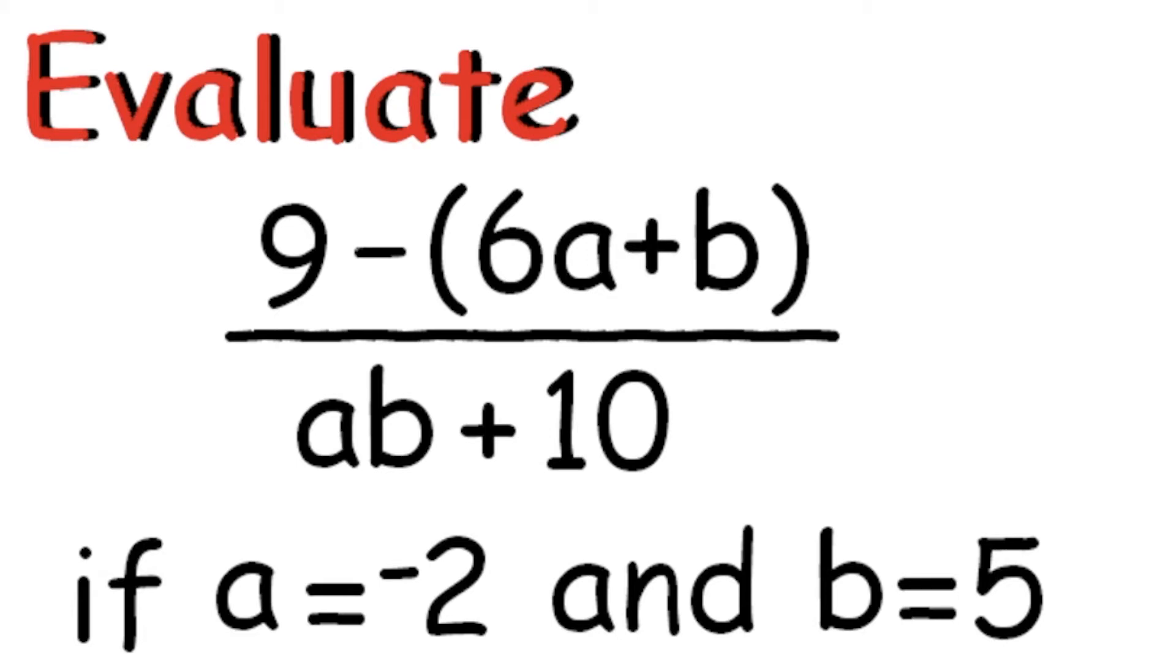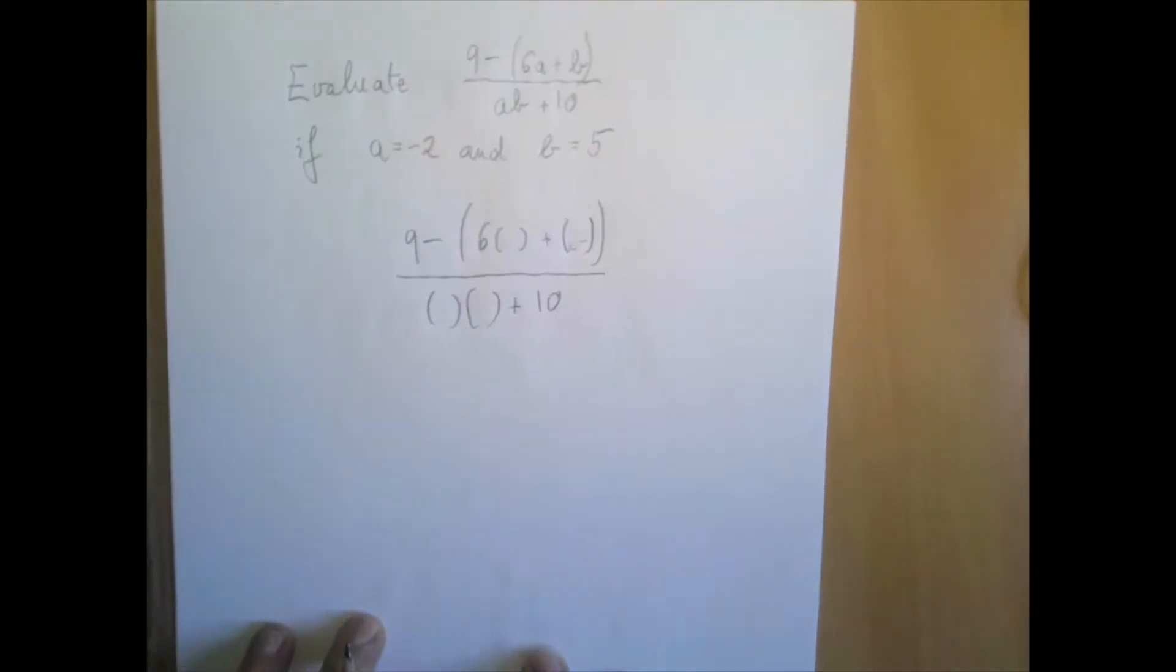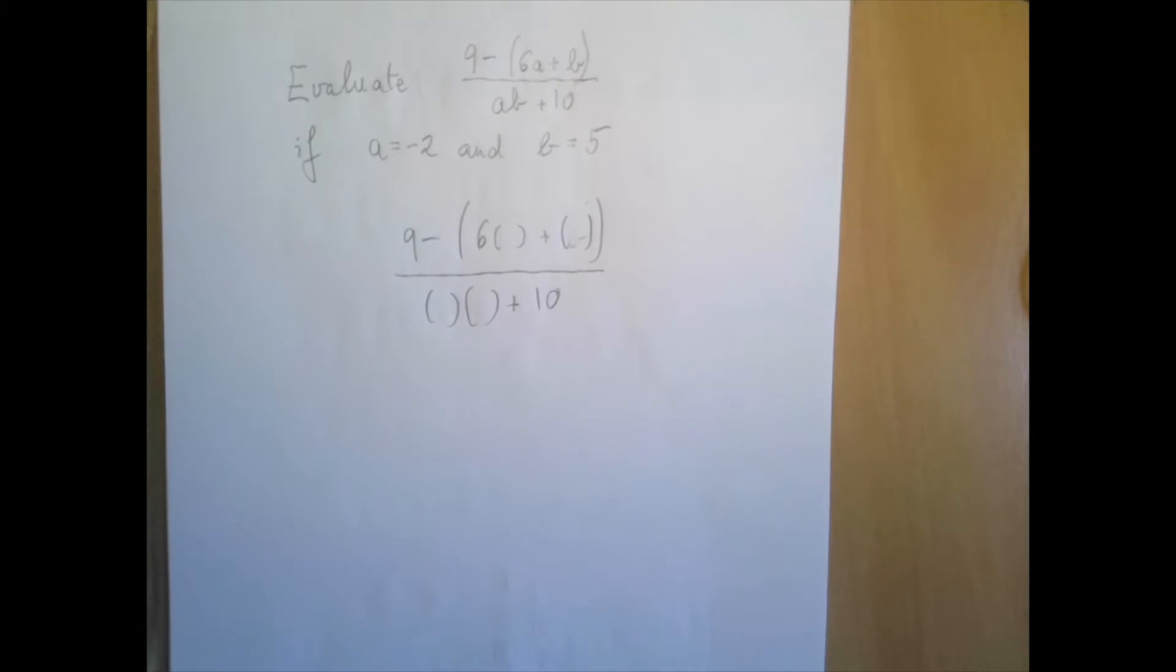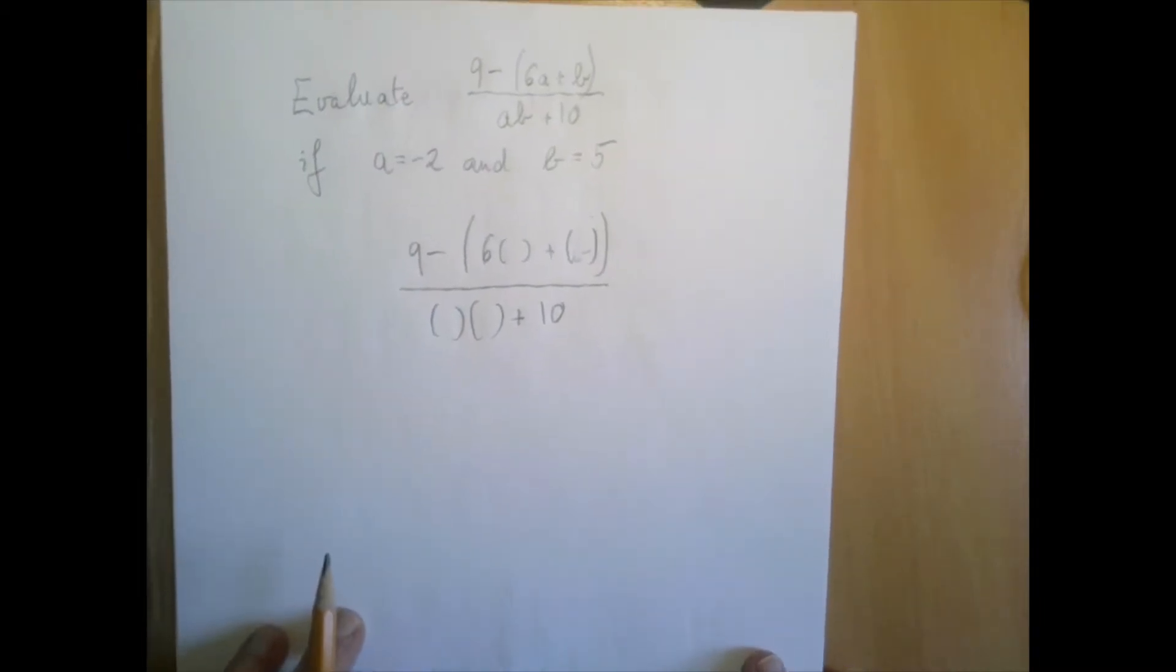So the first thing we're going to do is we're going to reduce this problem to an order of operations problem by substituting the values into the variable. And if this is new to you, my recommendation is to first copy the expression exactly as it is, but replacing the variables with a small little pair of parentheses. And once that's done, we're just going to copy the values into the parentheses.